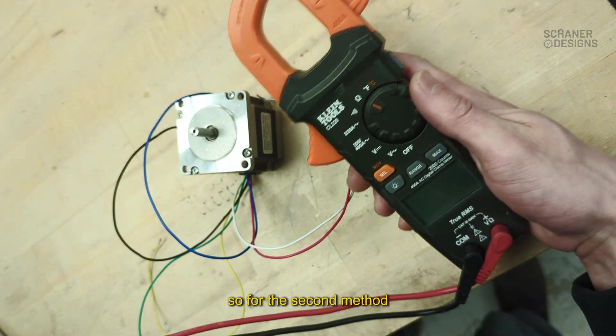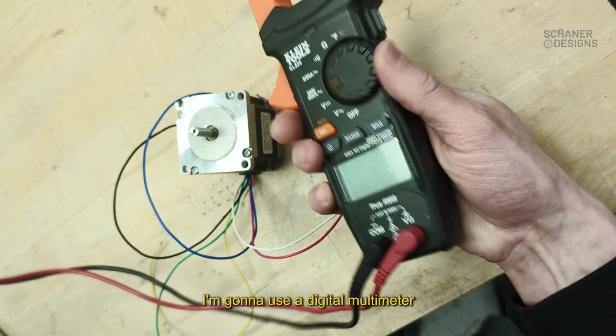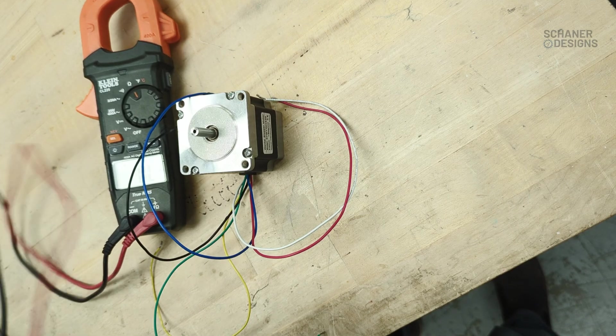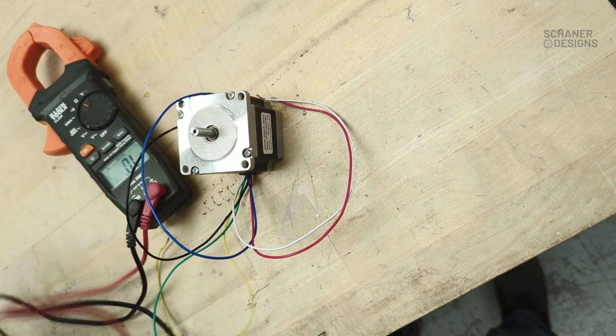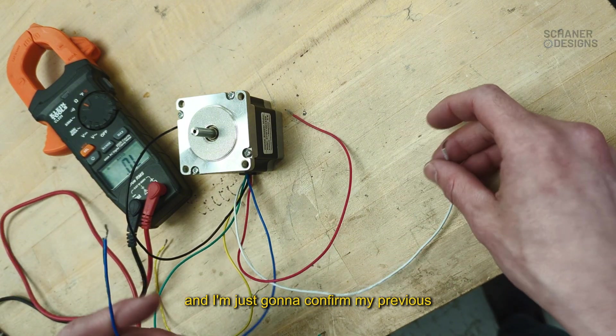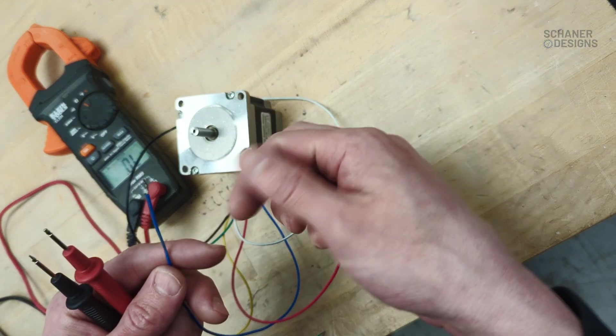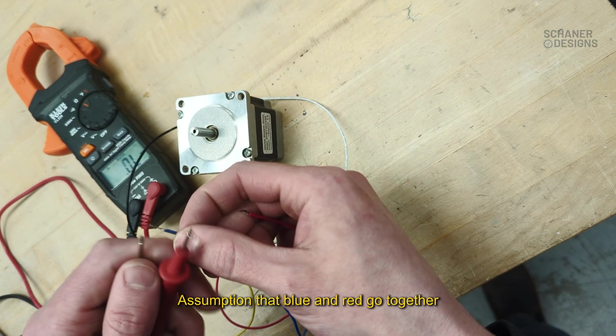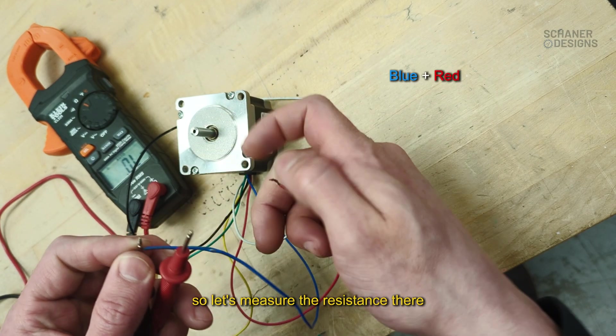For the second method, I'm going to use a digital multimeter and set it to an ohm value. I'm measuring resistance, and I'm just going to confirm my previous assumption that blue and red go together. Let's measure the resistance there.